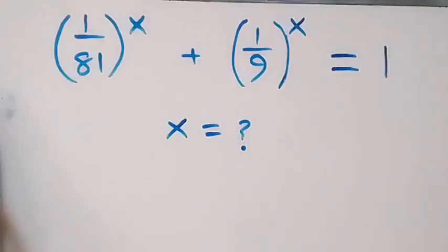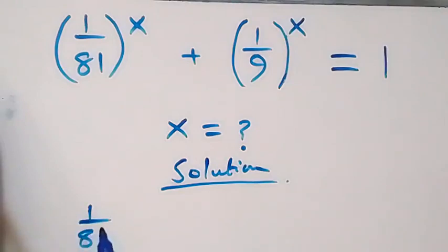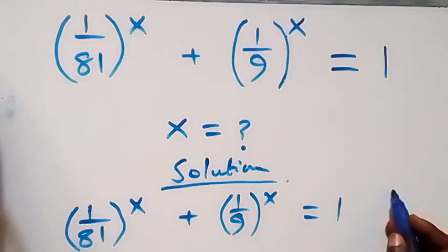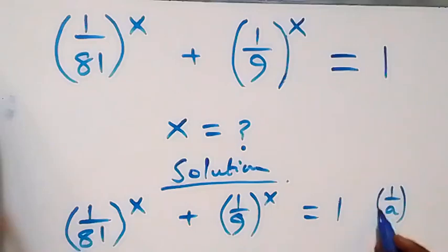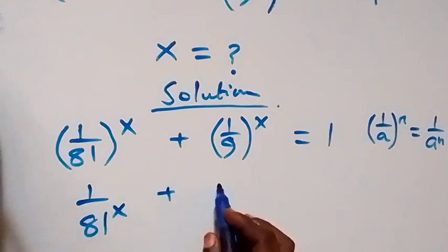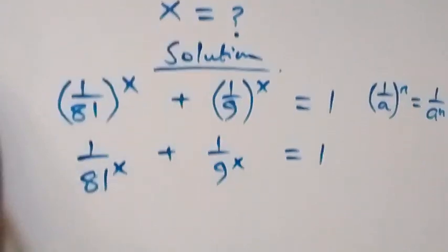Hello, you are welcome. How to solve for x in this exponential problem. From what we are given, which is 1 over 81 raised to power x, plus also 1 over 9 raised to power x, equals 1. When we follow the law of indices, 1 over a raised to power n is the same as writing each term separately.